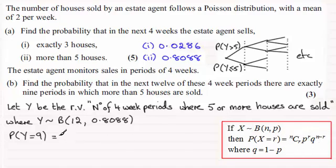So what we would have is for NCR, it will be 12C9. Then it's multiplied by P to the power R, that's the probability of success, which is 0.8088 to the power 9. And then it's multiplied by Q, that's the probability of failure, 1 minus P, so that's 1 minus 0.8088. And that's to the power N minus R, so that would be to the power 3. And if you work this out, you'll find that you get 0.2277 and so on.